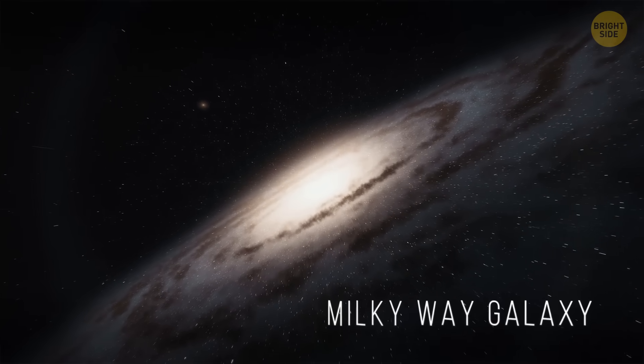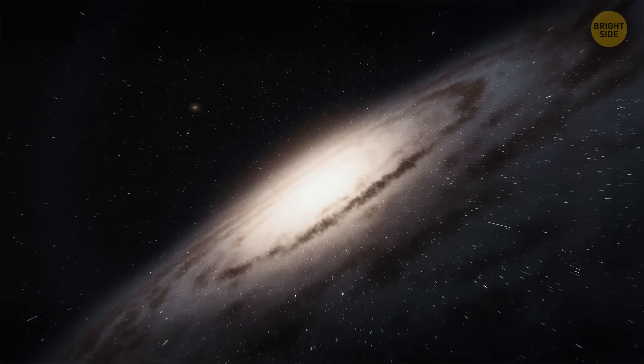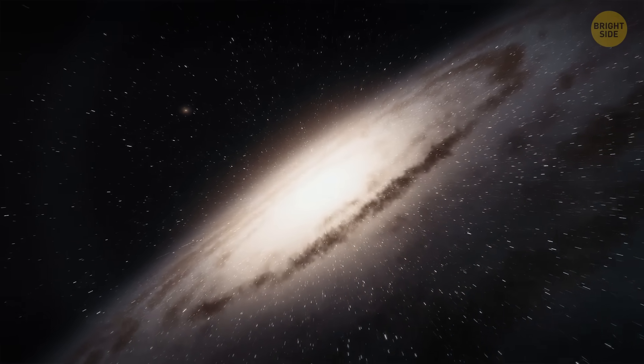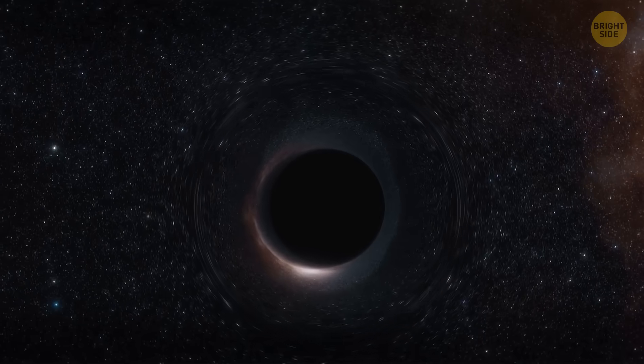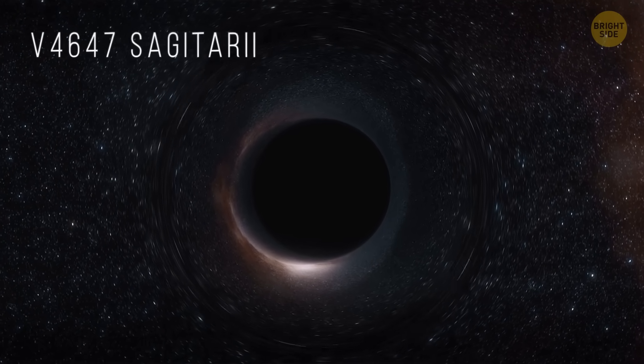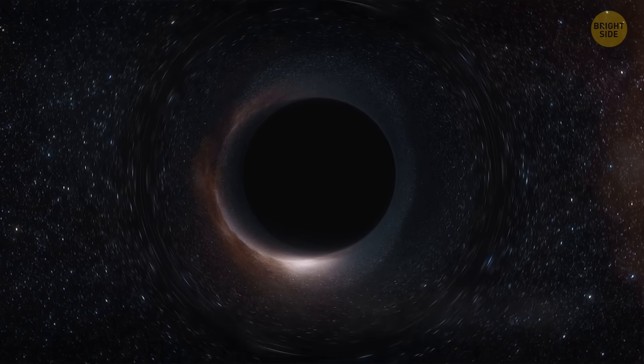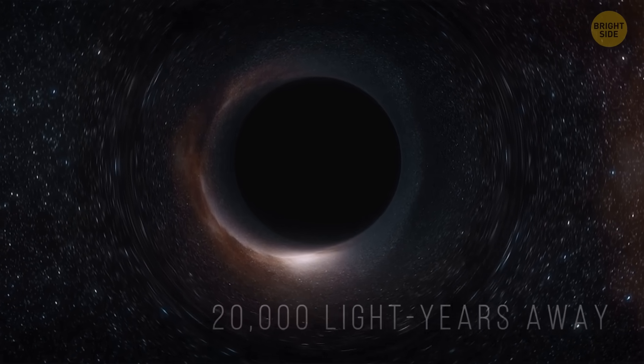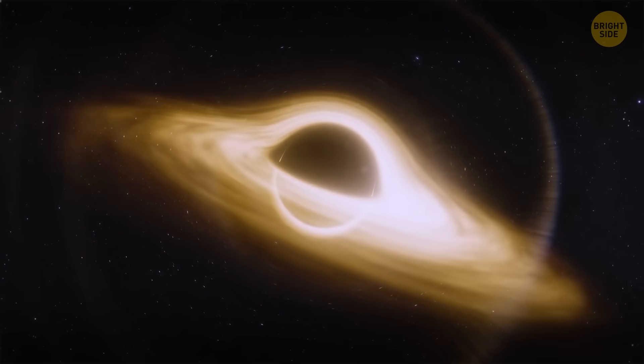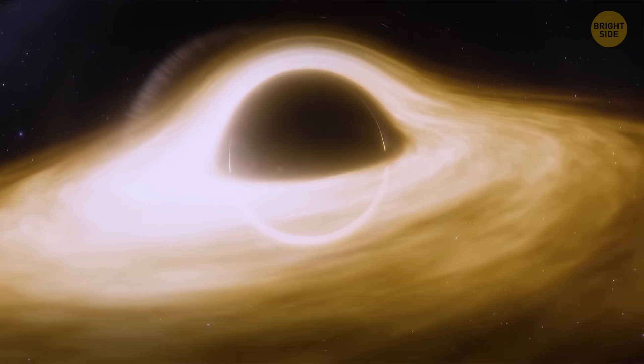Our home Milky Way galaxy might also contain a supermassive black hole. But we're in no danger. One of the closest large black holes, V4647 Sagittarii, is most likely 20,000 light years away. It's safe to observe the effects black holes create from a distance. Problems start when you get too close because of their mind-boggling gravitational force.